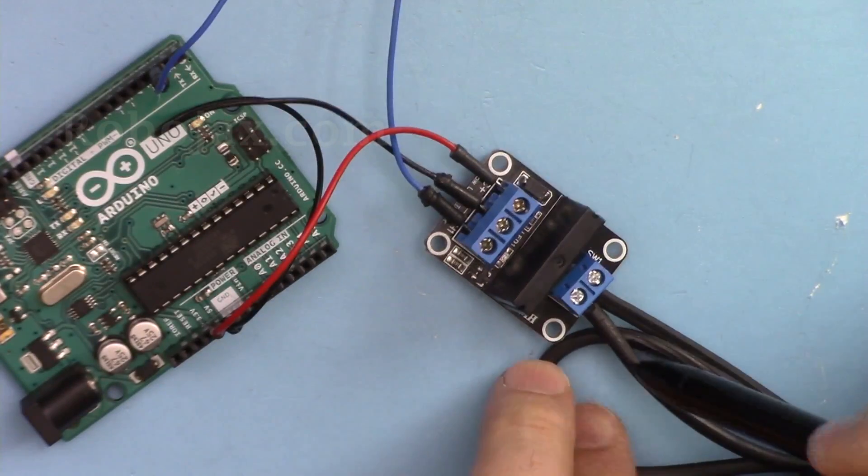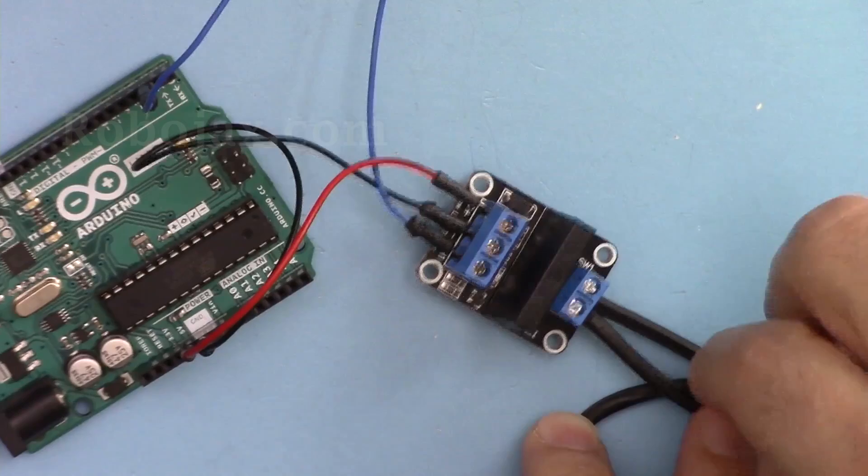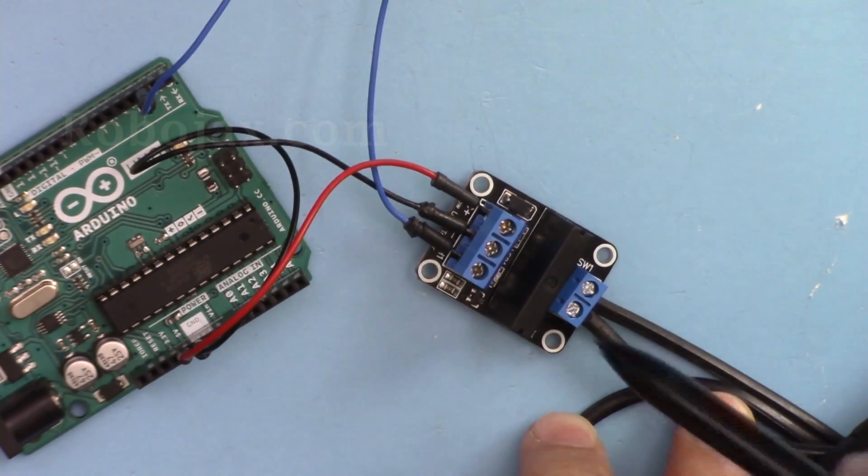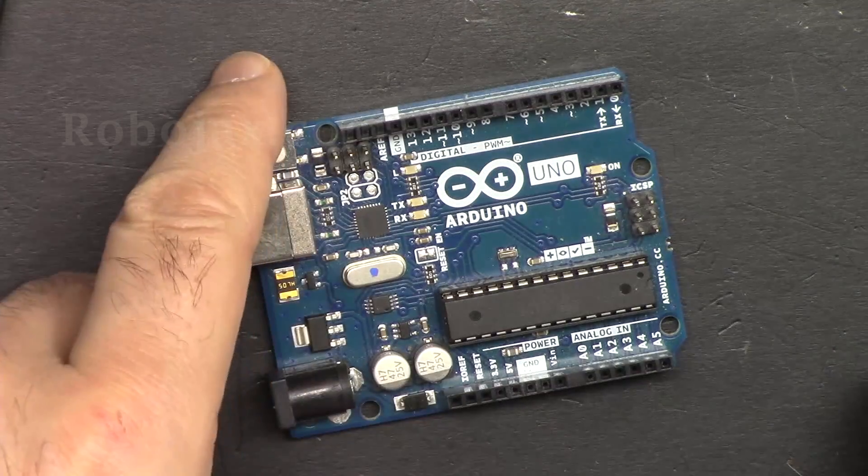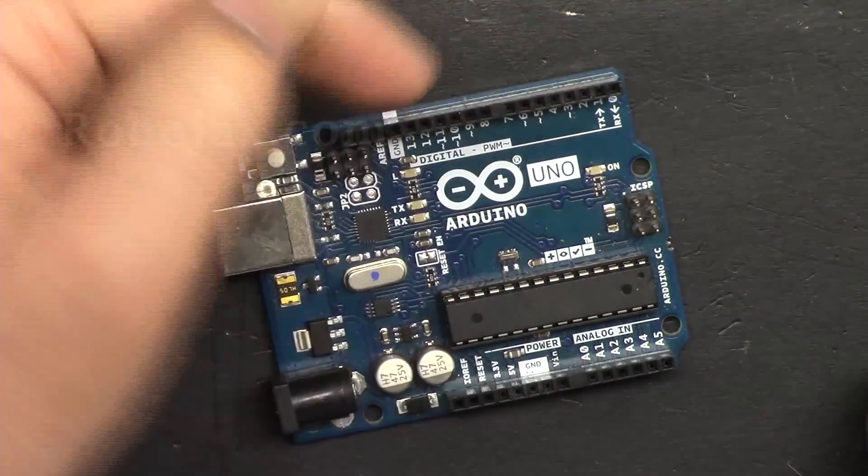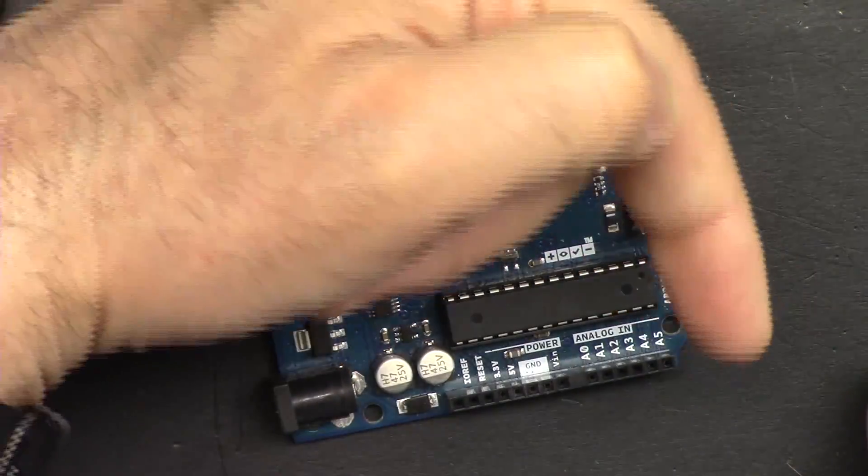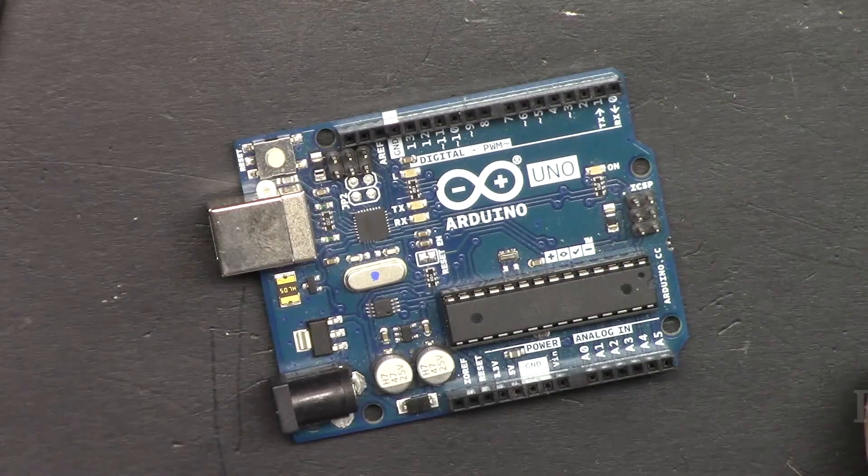The two wires here from the AC bulb have been connected to these two terminals. If you found this tutorial helpful, please thumb up and also click on the subscribe on the right side in the lower corner. I really appreciate it.